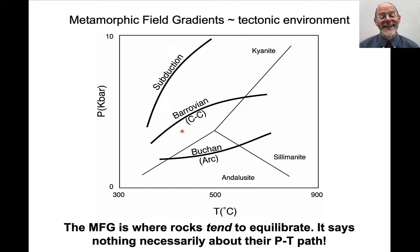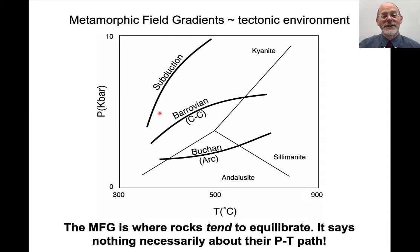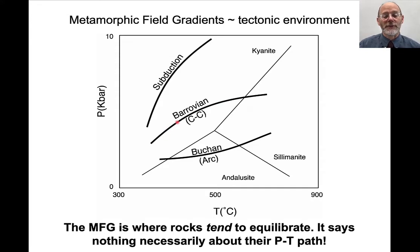The metamorphic field gradient represents where metamorphic rocks tend to equilibrate during whatever process forms them — it doesn't describe how they got there. Whereas metamorphic pressure-temperature paths might be similar to the metamorphic field gradient for a subduction zone or an arc, it has been shown repeatedly that the pressure-temperature paths giving rise to Barrovian metamorphic field gradients look very different from that particular distribution of pressures and temperatures.